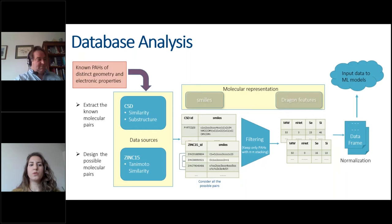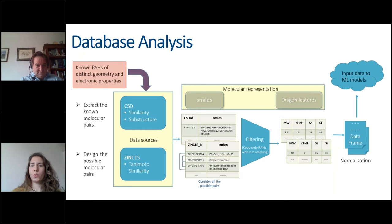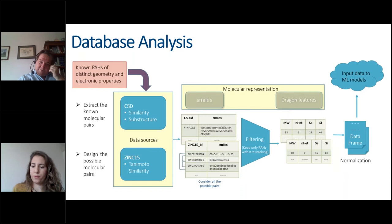The second database we used is the Zinc 15, which is a database that contains all the purchasable molecules that we can have. So we started again searching for pines starting from the same initial ones to construct a second list with all the possible pairs that we could try in the lab. So we have two datasets, one with the known data and one with all the possible pairs that might form co-crystals.